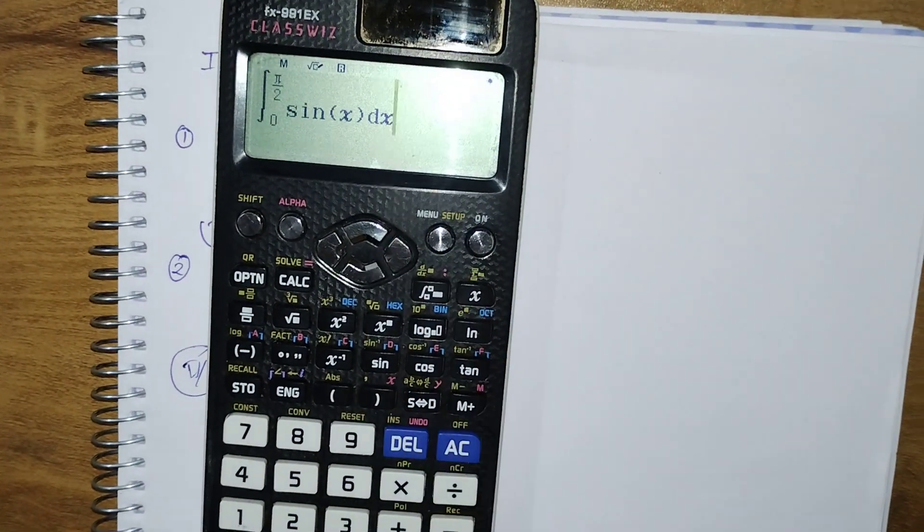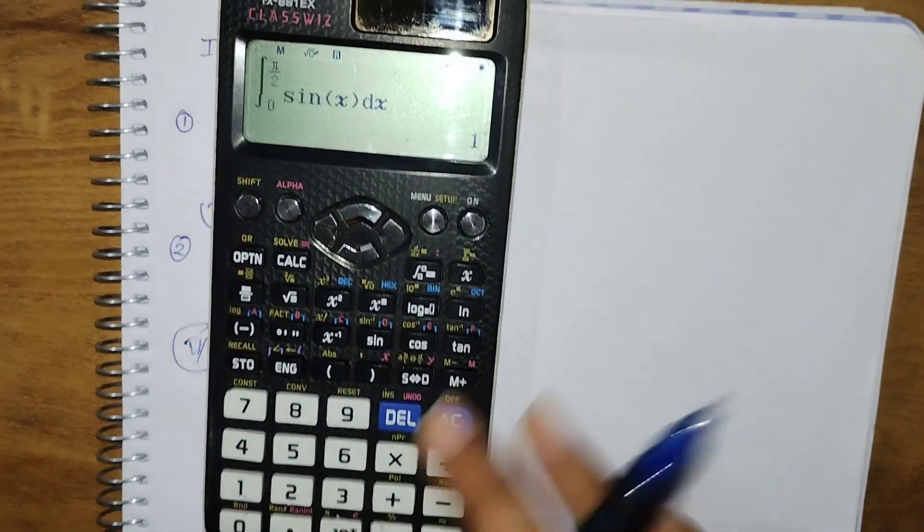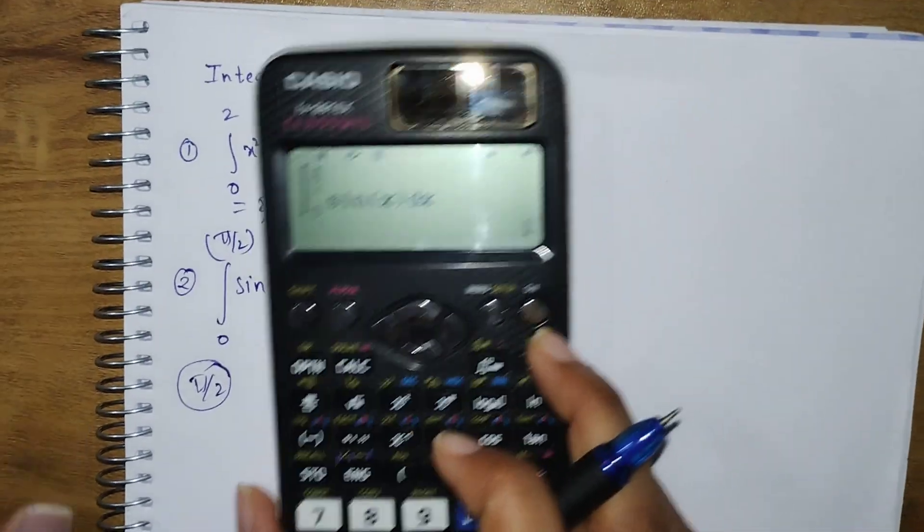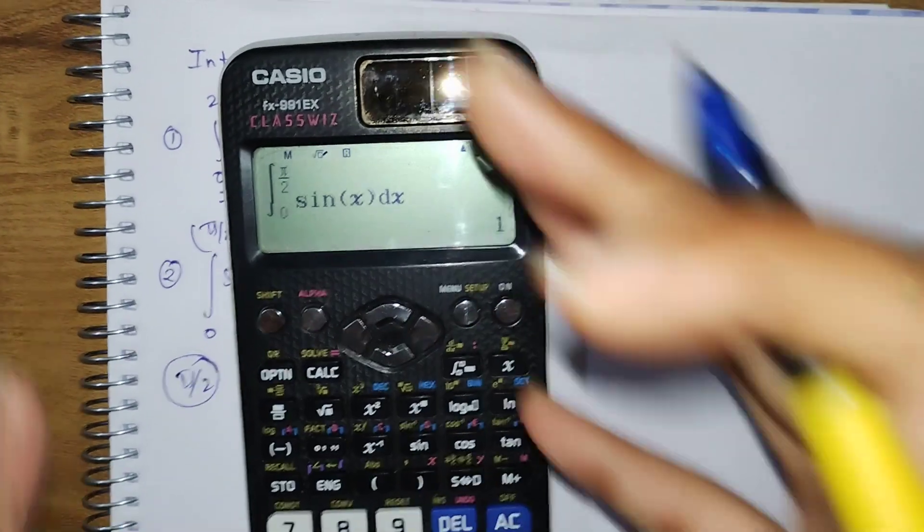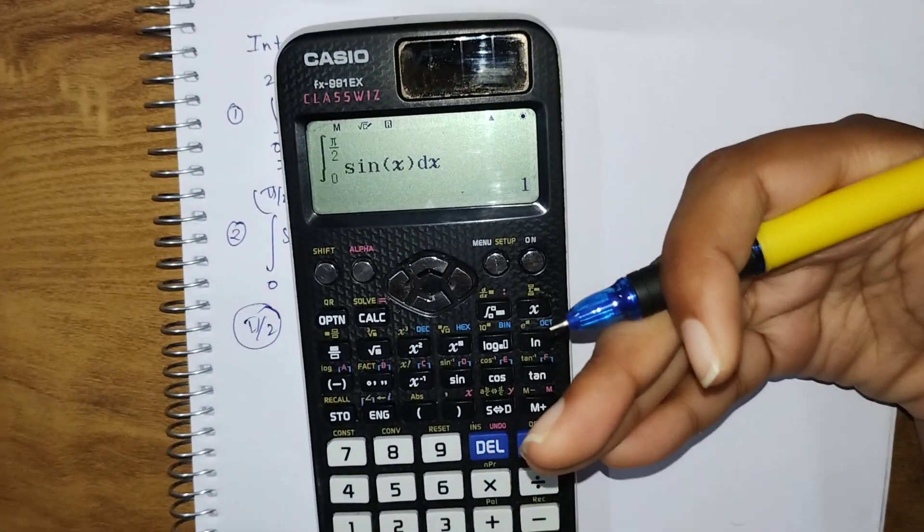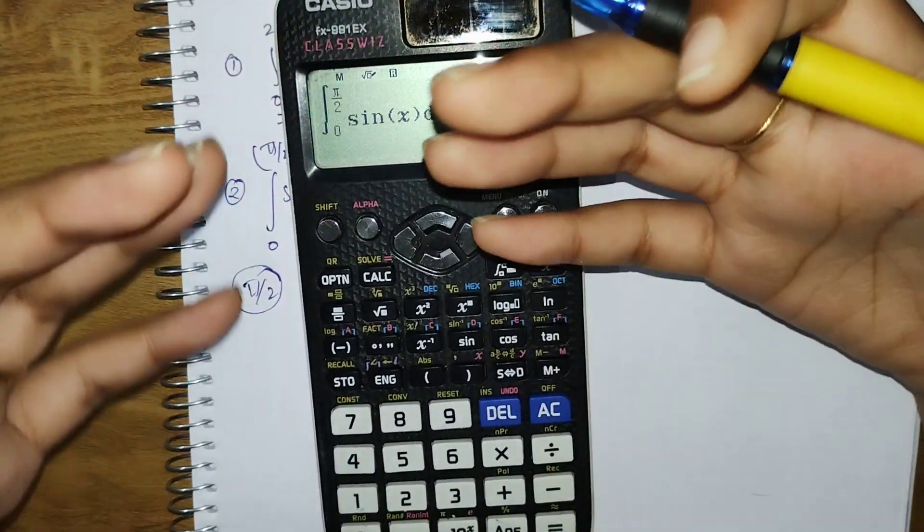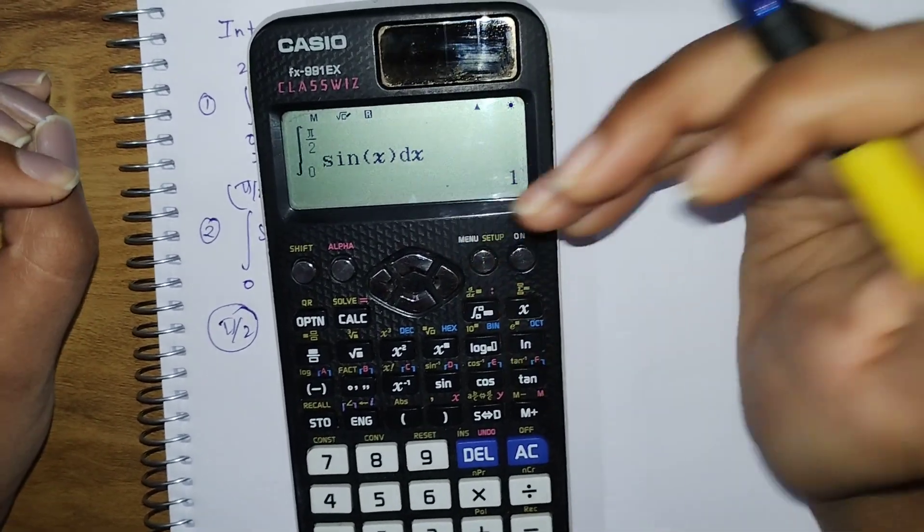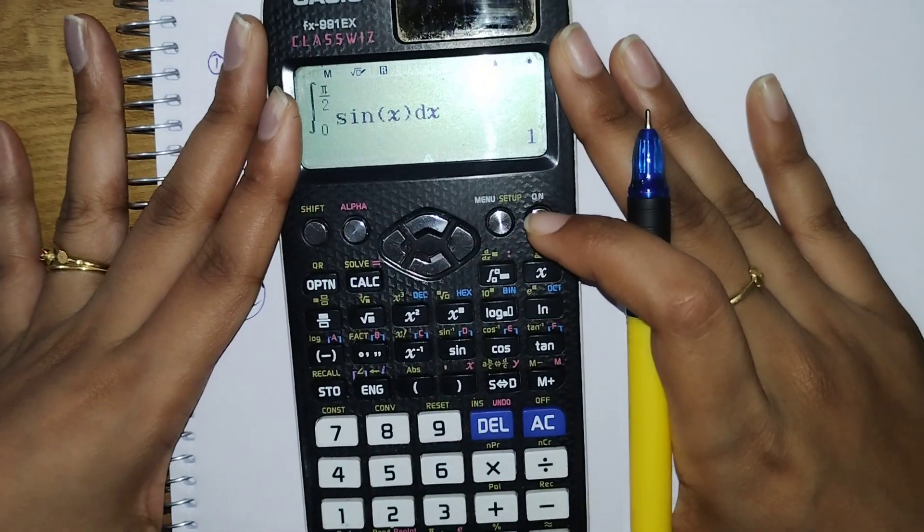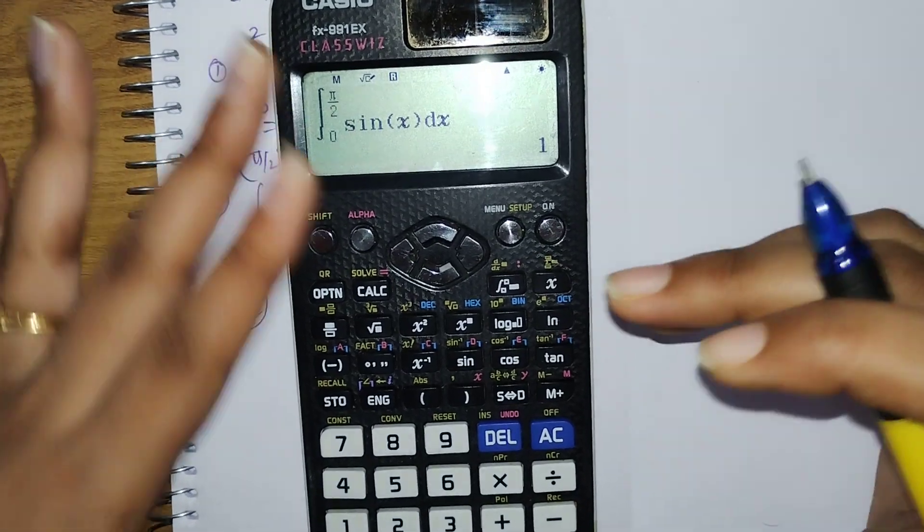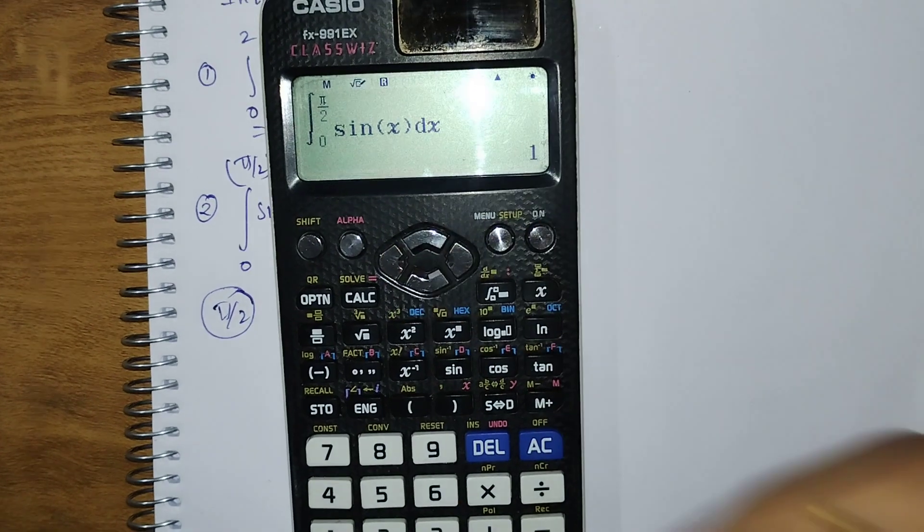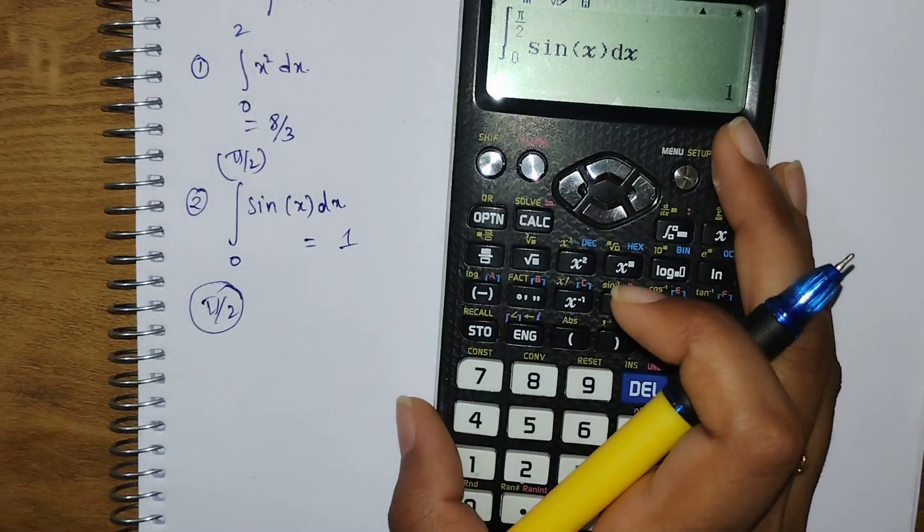Click on equals. You got the answer as 1. You could have done it manually, but the point is how to do these types of calculations using a scientific calculator in case you get a complex question where you have to use these calculators. For that reason, I'm explaining how to set up and use this calculator.